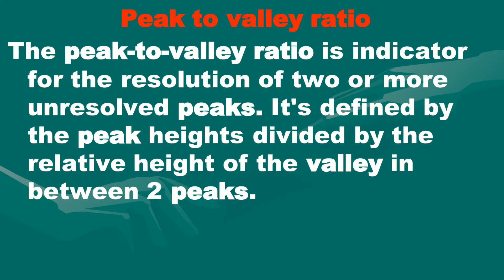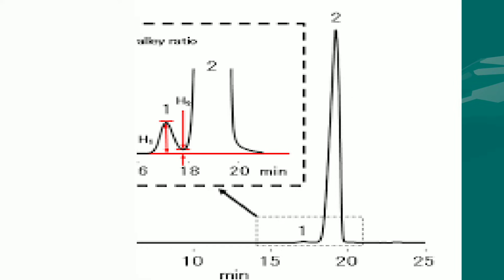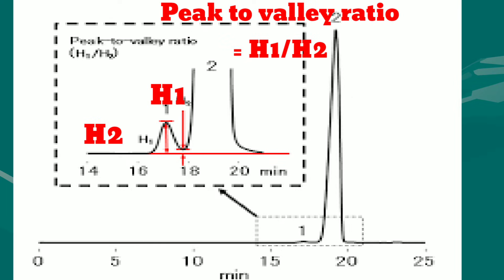Next is peak to valley ratio. The peak to valley ratio is an indicator for the resolution of two or more unresolved peaks. It is defined by the peak height divided by the relative height of the valley in between two peaks. In this figure, you can see how to calculate the peak to valley ratio between two peaks. The formula of peak to valley ratio is H1 / H2.